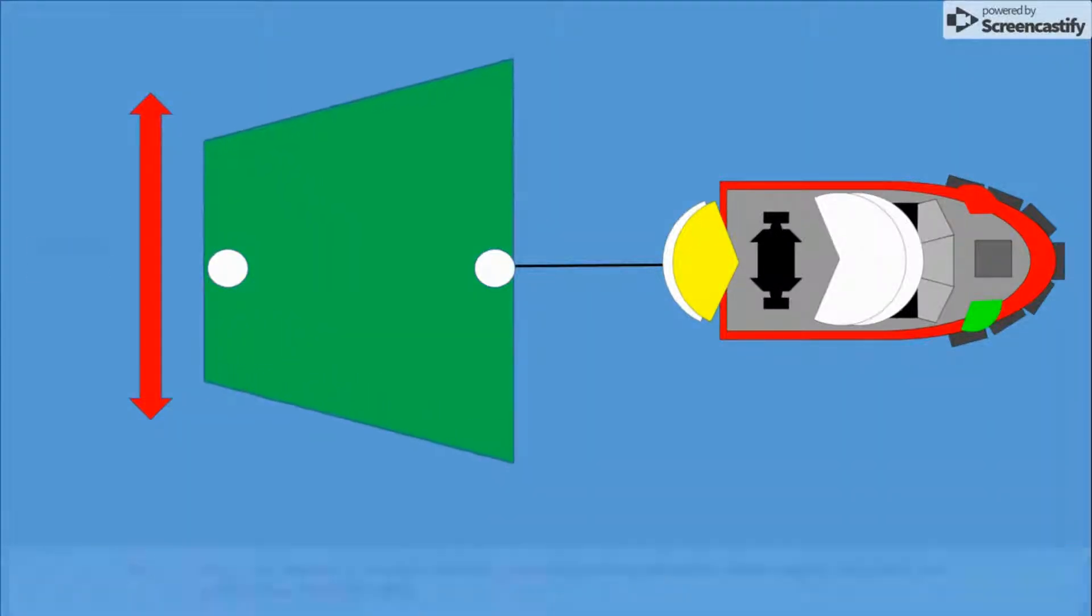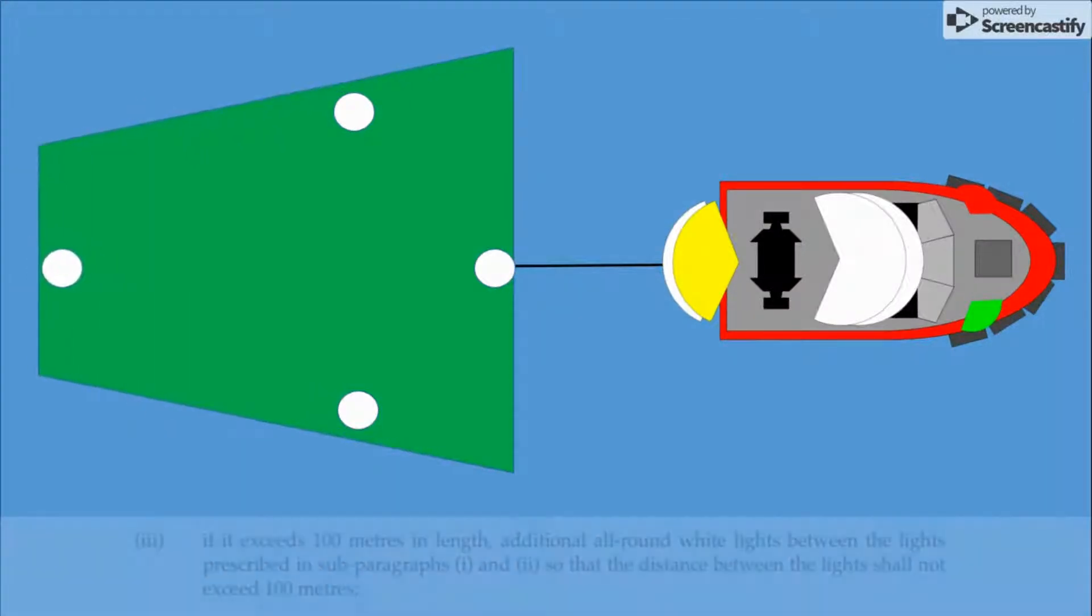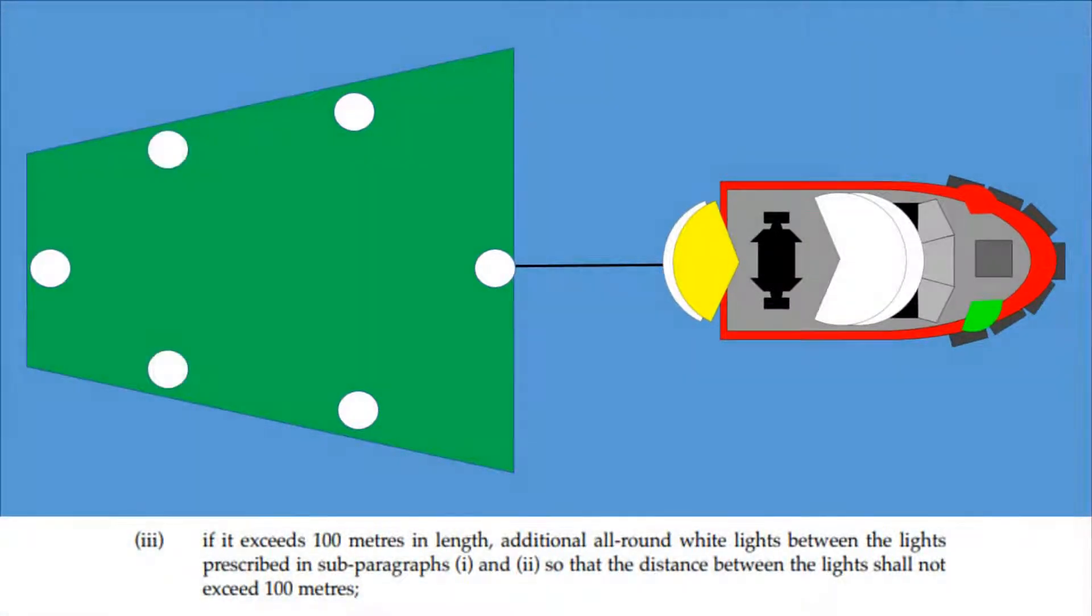If it is 25 meters or more in breadth, two additional all-round white lights at or near the extremities of its breadth. If it exceeds 100 meters in length, additional all-round white lights between the lights prescribed in subparagraphs 1 and 2, so that the distance between the lights shall not exceed 100 meters.